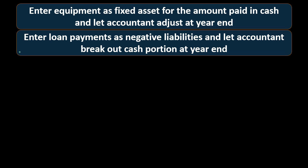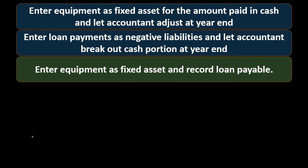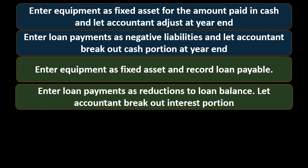We'll discuss that more when we get to the loan payments. Our next option — the next level of complexity — is that we can enter the equipment as a fixed asset and record the loan payable. Meaning we're going to put it on the books at the sticker price, the $15,000, recording it as a fixed asset, then record the $9,000 paid in cash and the difference, $6,000, to a payable.